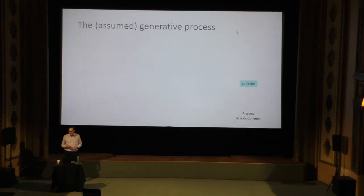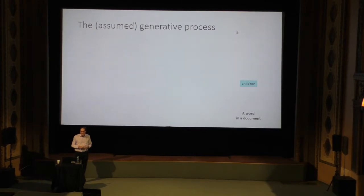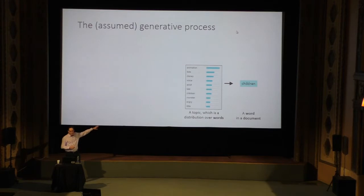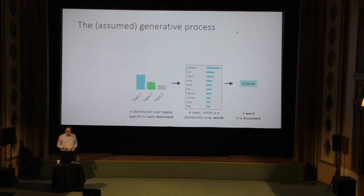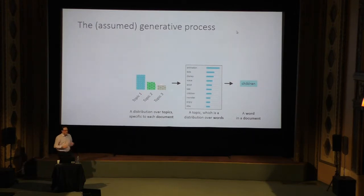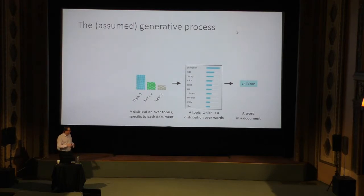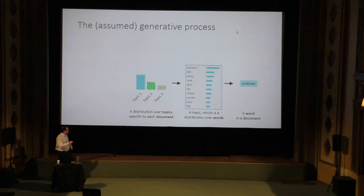If we diagram this, a word is spit out by a topic — in this case, the blue topic. We looked it up in the blue topic, rolling dice to pick a word at random. How did we pick blue? We picked blue by randomly selecting from a distribution of topics. And this particular mix of colors is unique to each document — each document has its own particular topic distribution.